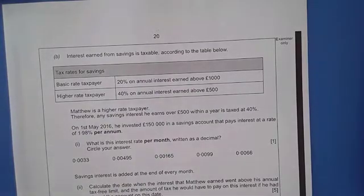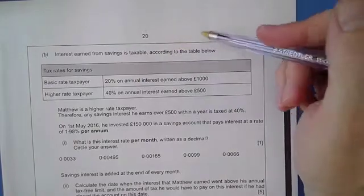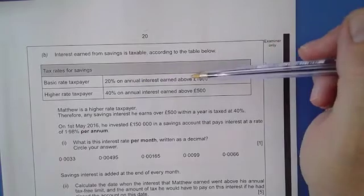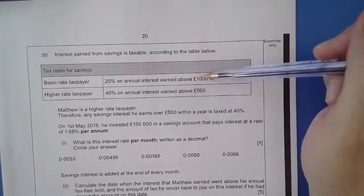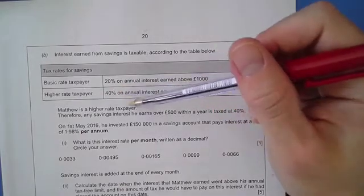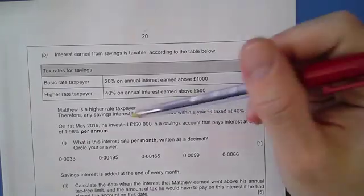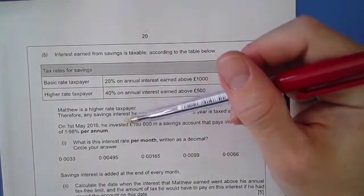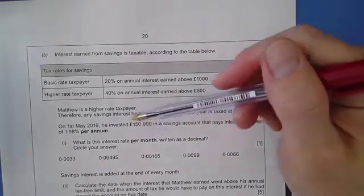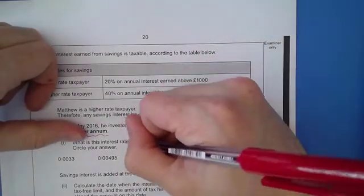Next question. It says interest earned from savings is taxable according to the table below. Basic rate taxpayer pays 20% annual interest earned above £1,000, and higher rate pays 40% on annual interest earned above £500. Matthew is a high rate taxpayer, therefore any savings interest earned over £500 is taxed at 40%. On the 1st of May, he invested £150,000 to a savings account with an interest rate of 1.9% per annum.